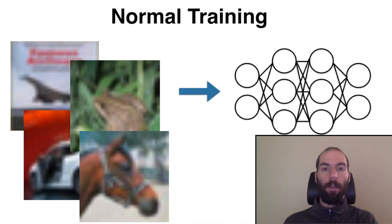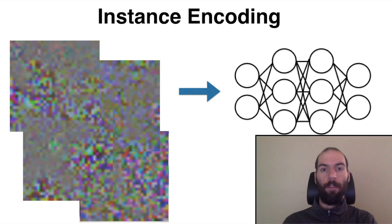Instead of training a model directly on the private images we care about, instance encoding transforms each image with a carefully constructed randomizing transformation and trains the model on these encoded images.